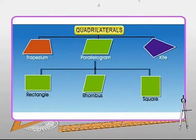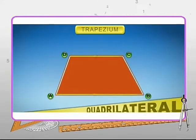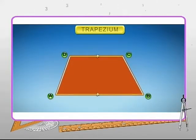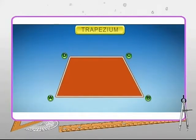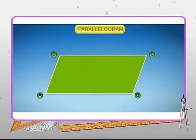A trapezium is a quadrilateral with a pair of opposite sides parallel. Consider the quadrilateral ABCD shown here. It has the opposite sides AB and CD parallel to each other. Here's something interesting: the non-parallel pair of sides of a trapezium may be equal or non-equal in length.